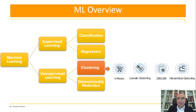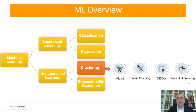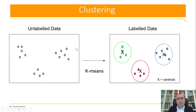In Orange Data Mining, we have many clustering algorithms: we have k-means, Louvain clustering, DBSCAN, and hierarchical clustering. I will explain all these models in Orange Data Mining. This is an example of clustering — this is unlabeled data and we need to use k-means to identify the groups.